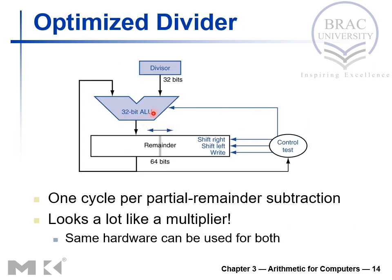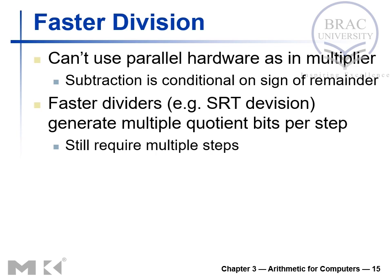The optimized divider hardware looks similar to that used in multiplication. Faster division is a challenge because we cannot perform parallel operations as in the case of a multiplier. Subtraction is conditional on the sign of the remainder, which is why we cannot always have parallel operations.